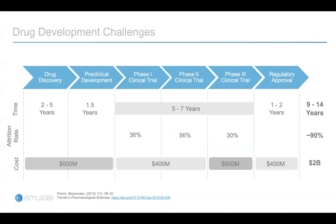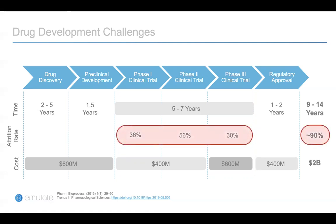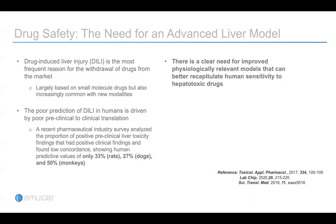Let's take a look at the current drug discovery and development pipeline. Approximately 9 out of every 10 drug candidates fail to receive regulatory approval. This high attrition rate in clinical trials contributes substantially to the inefficiency of the drug development cycle. This is because preclinical models are fundamentally insufficient to predict human response. Especially within the drug safety area, among other organs, liver toxicity is a leading cause for drug failure in the clinic and from the market. This poor prediction of human response is due to poor preclinical to clinical translation.